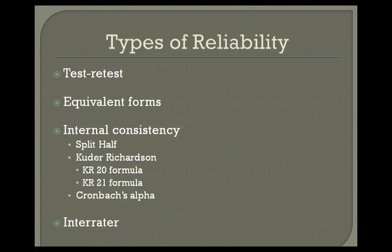There are several types of reliability. Test-retest is when a group of subjects are given an instrument, some time passes, they get the same test again, and we correlate the pretest with the post-test, hoping people don't remember items too much. Sometimes we have two forms of the same instrument — participants are given both forms close in time and the scores are correlated. This is called equivalent forms, though a limitation is that the two forms do have different items.